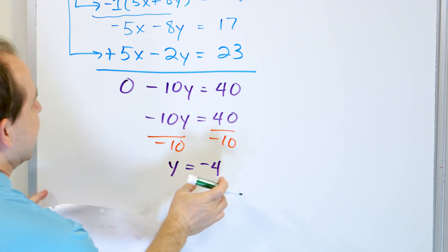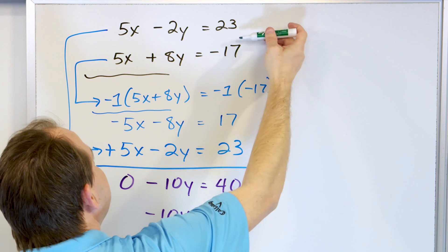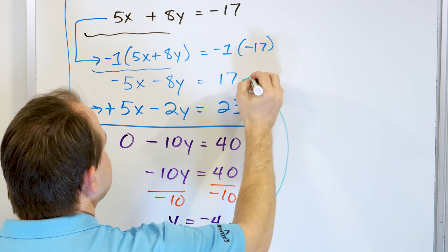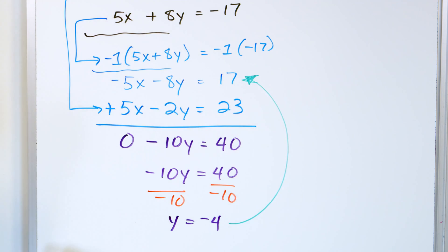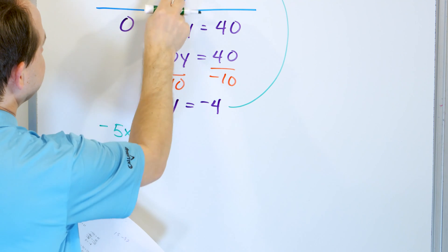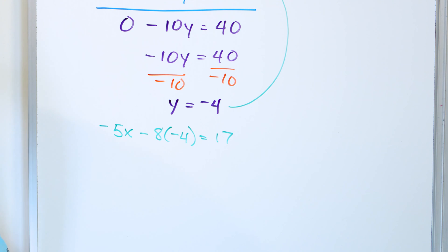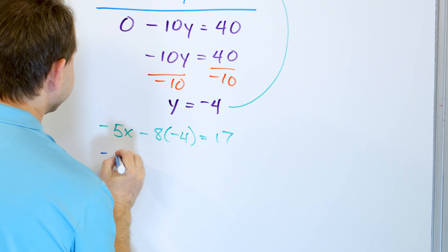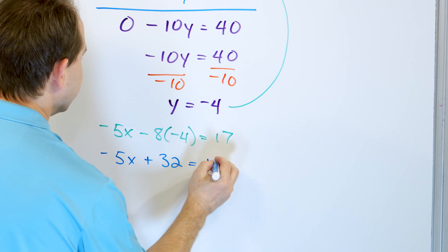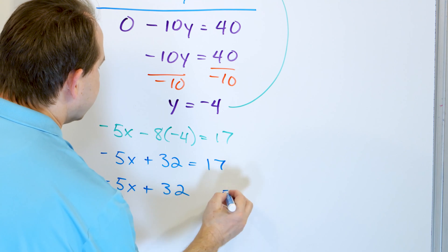I can take y equals negative 4 and put it into any of the equations. I'll put it into the modified top equation. So I have negative 5 times x minus 8 times y, where y is negative 4, equals 17. Negative 8 times negative 4 becomes positive 32, so negative 5x plus 32 equals 17.